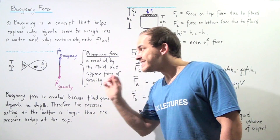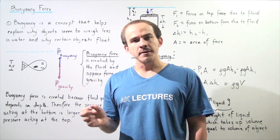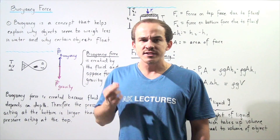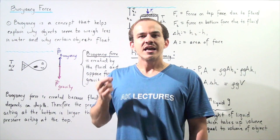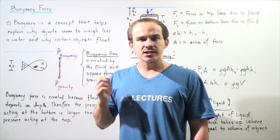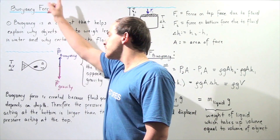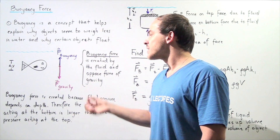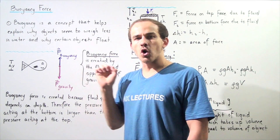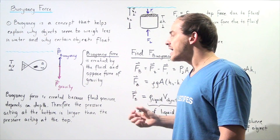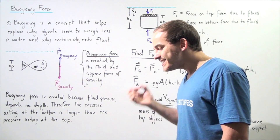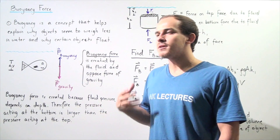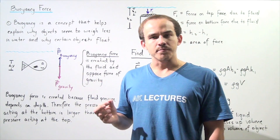But the fish is in fact in static equilibrium, so there must exist an opposing force that has the same exact magnitude but points in the opposite direction of the gravitational force. This force is known as the buoyancy force. What exactly is the buoyancy force — in other words, where does it come from?